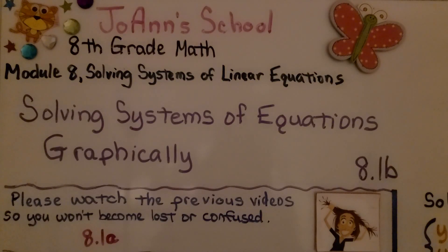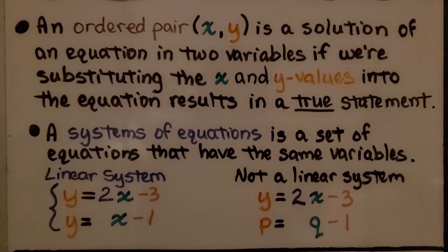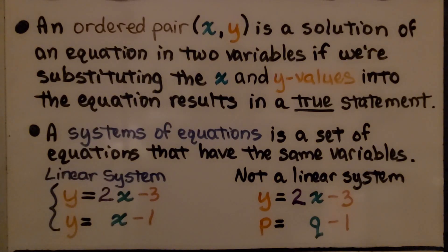Solving systems of equations graphically, lesson 8.1b. An ordered pair (x, y) is a solution of an equation in two variables if substituting the x and y values into the equation results in a true statement.